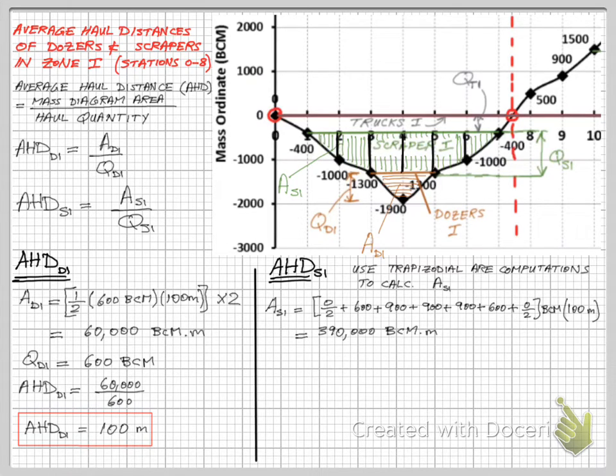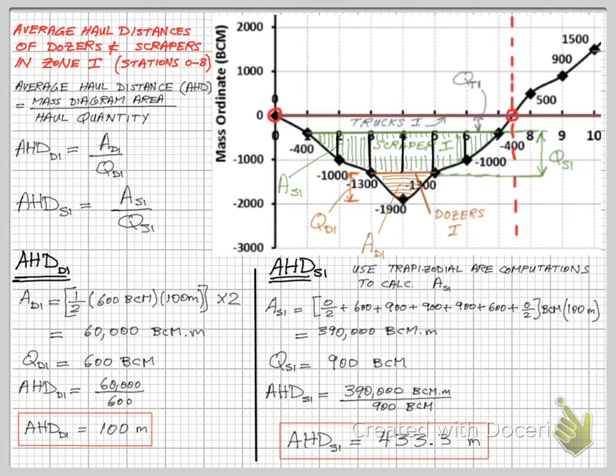By the end of the calculations we get 390,000 bank cubic meter meter for AS1. When we apply the AHD formula we get 433.33 average haul distance for the scrapers in the first zone.